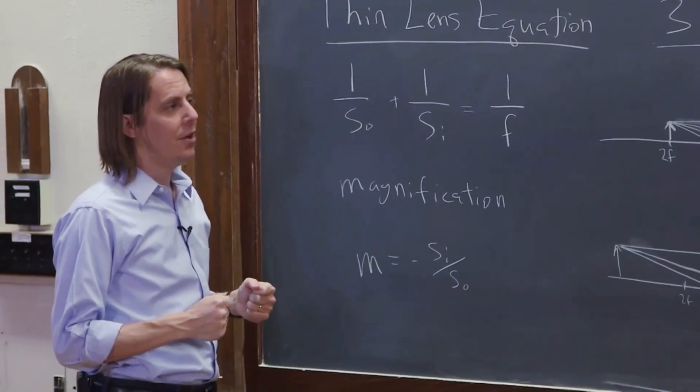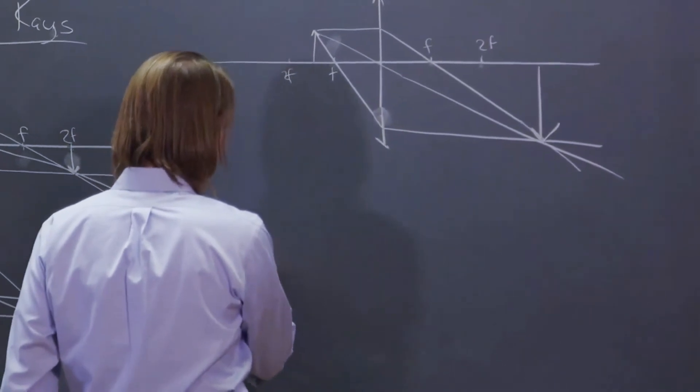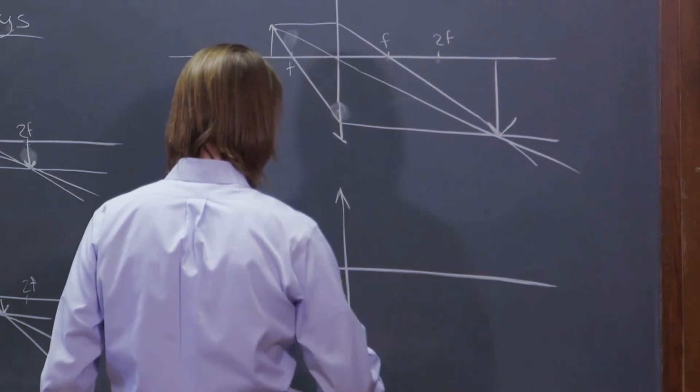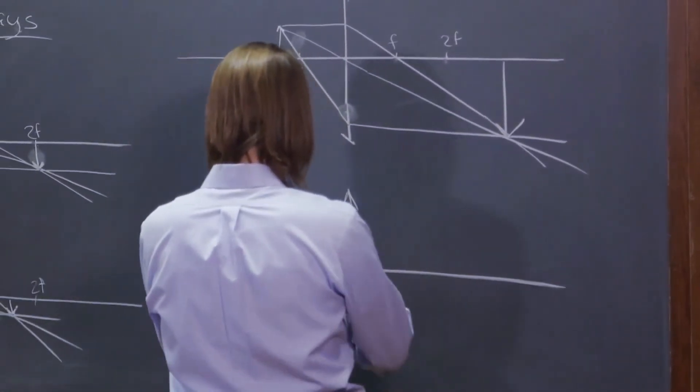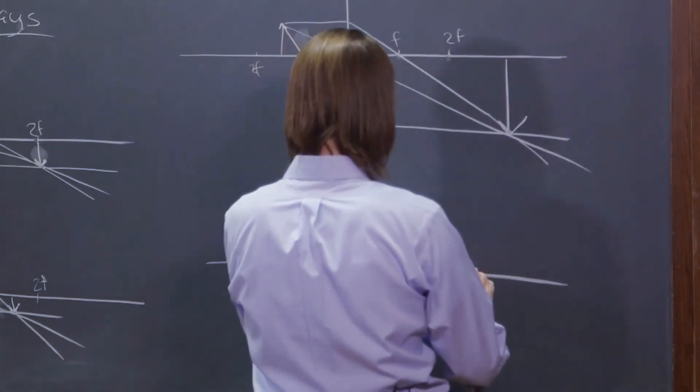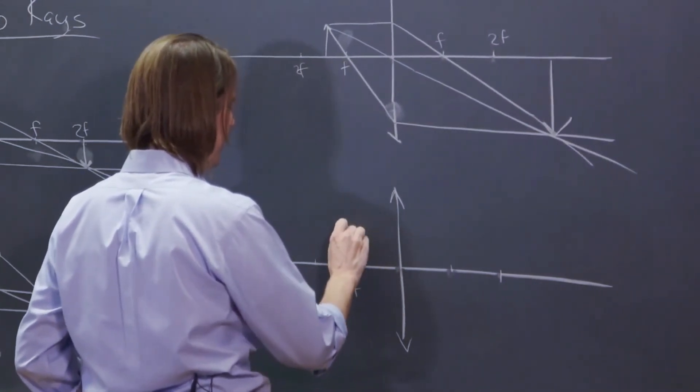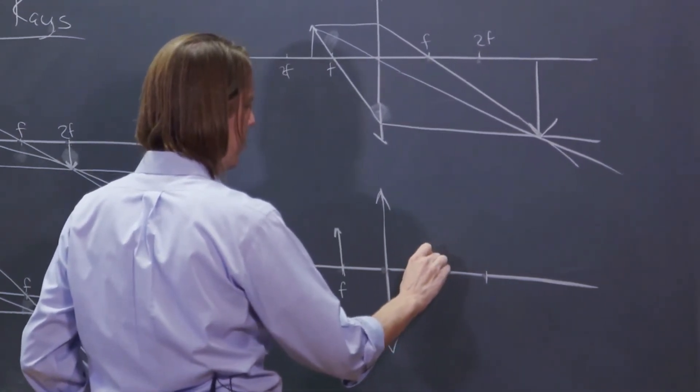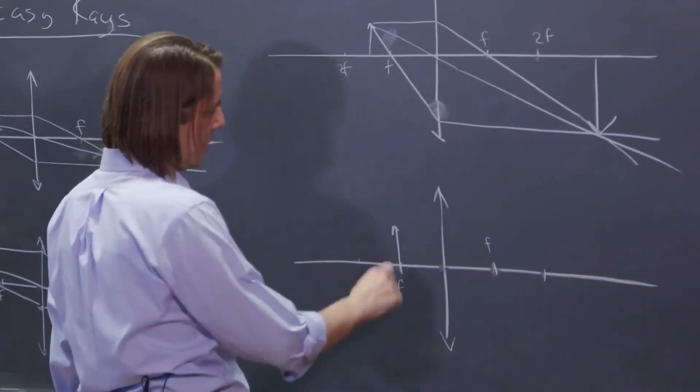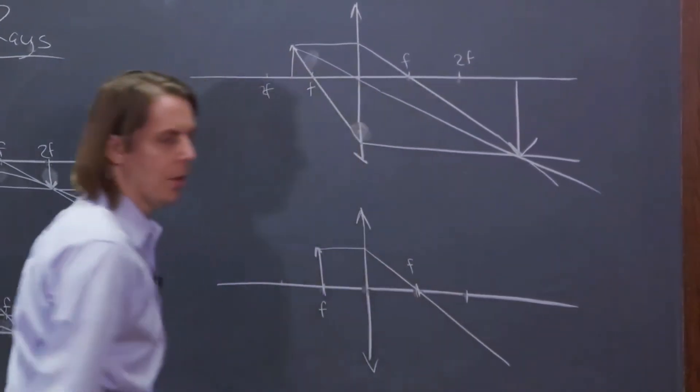So you say, well, magnification, that's exciting. Let's push it even closer. Let's put the thing on the focus and see what happens. Maybe we can magnify forever. And the focal points are f and 2f. You really just need f. Let's put it right here, right on f. There's f as well.